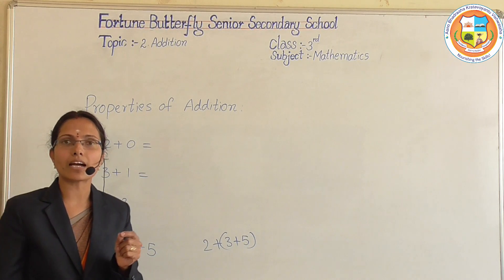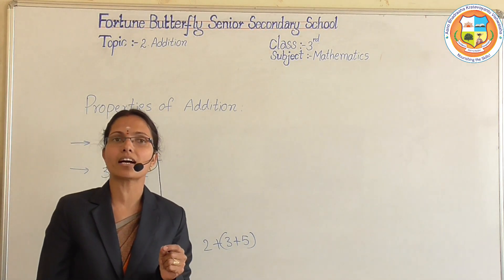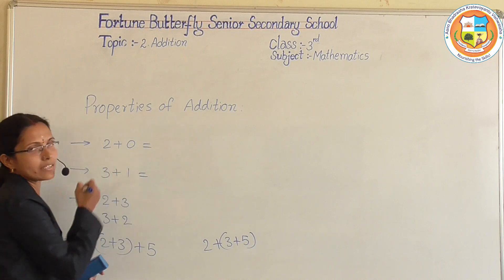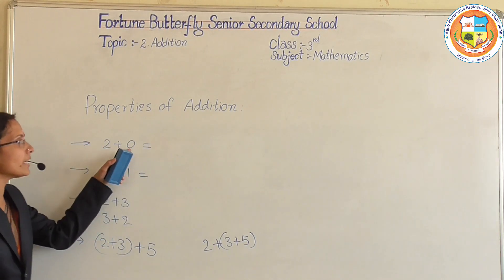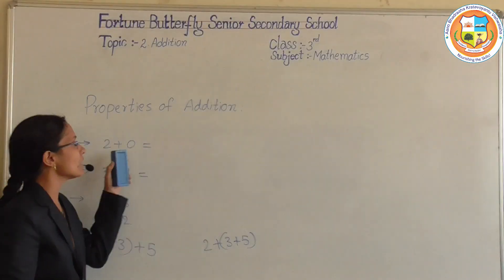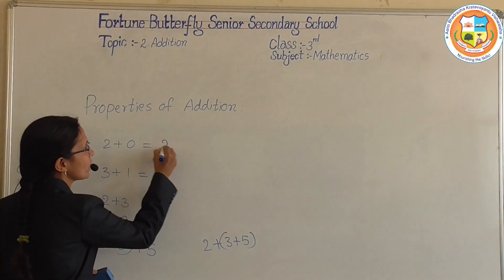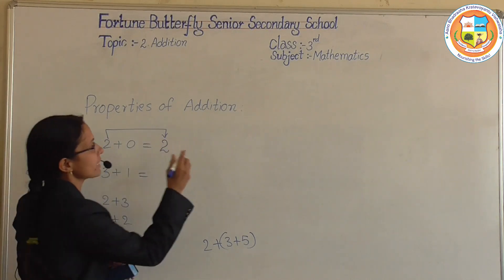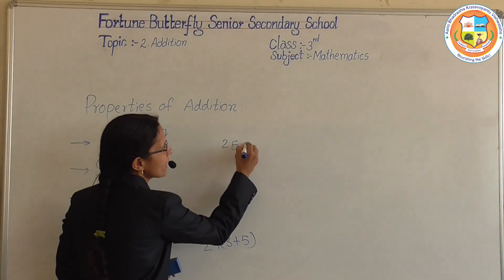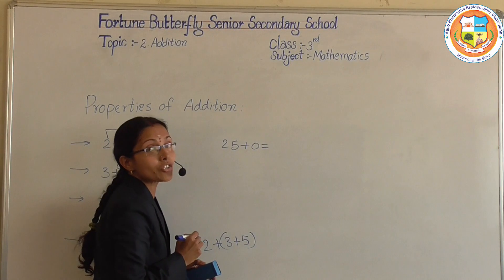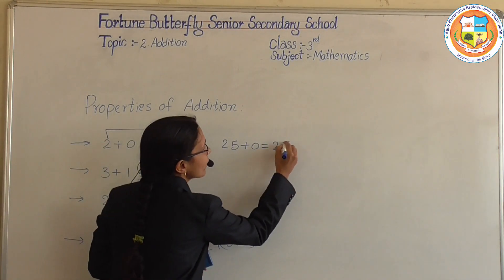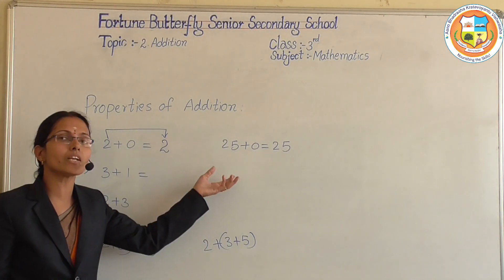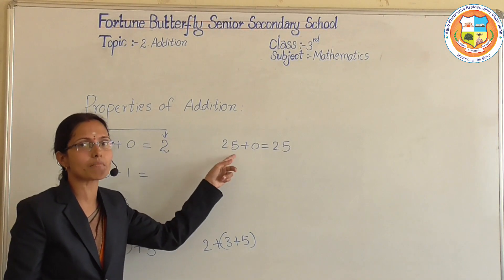Any number adding with 0, then we will get the answer as the same number. For example, I am adding 0 to 2. We will get the answer as 2 only — the same number comes as result. For example, 25 plus 0, how much? The answer is 25. So when we add 0 to any number, we will get the result as the same number.